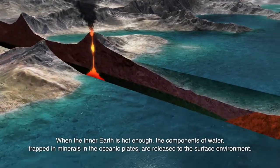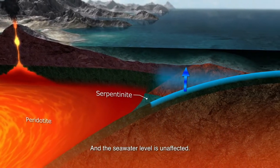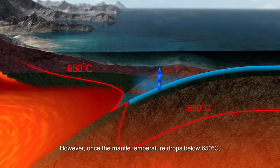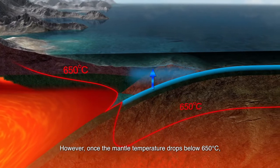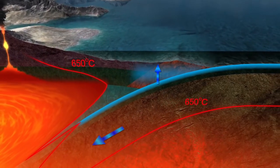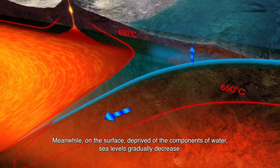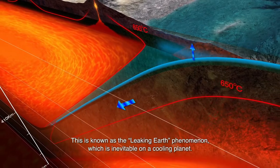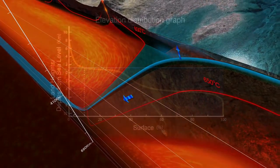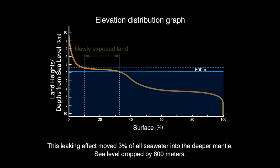When the inner Earth is hot enough, the components of water trapped in minerals in the oceanic plates are released to the surface environment, and the seawater level is unaffected. However, once the mantle temperature drops below 650 degrees Celsius, minerals carry these water components down into the upper mantle. On the surface, deprived of the components of water, sea levels gradually decrease. This is known as the leaking Earth phenomenon, which is inevitable on a cooling planet. This leaking effect moved 3% of all seawater into the deeper mantle, and sea level dropped by 600 meters.